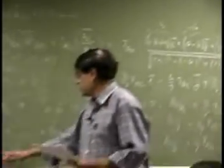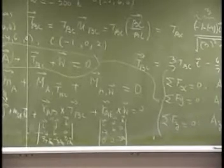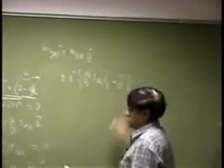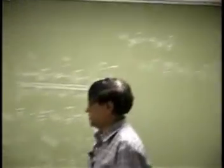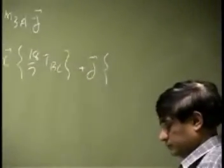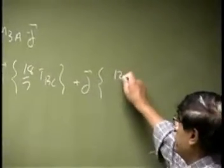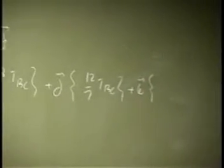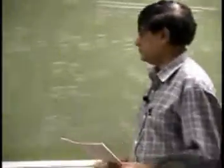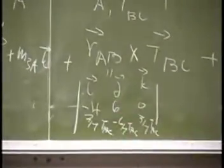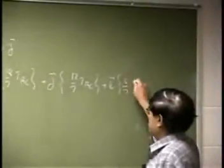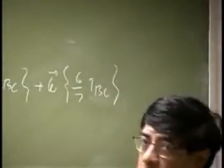We need to expand the determinants. You are going 6 times 3, this is 18/7 T_BC. So plus J. So we go with J, so we go this times and this times. So that will be 12, 12/7 T_BC plus K. Now we are looking at this times this minus this times this. So that is 24/7 minus 18, so that is 6/7 T_BC. So that is one product.